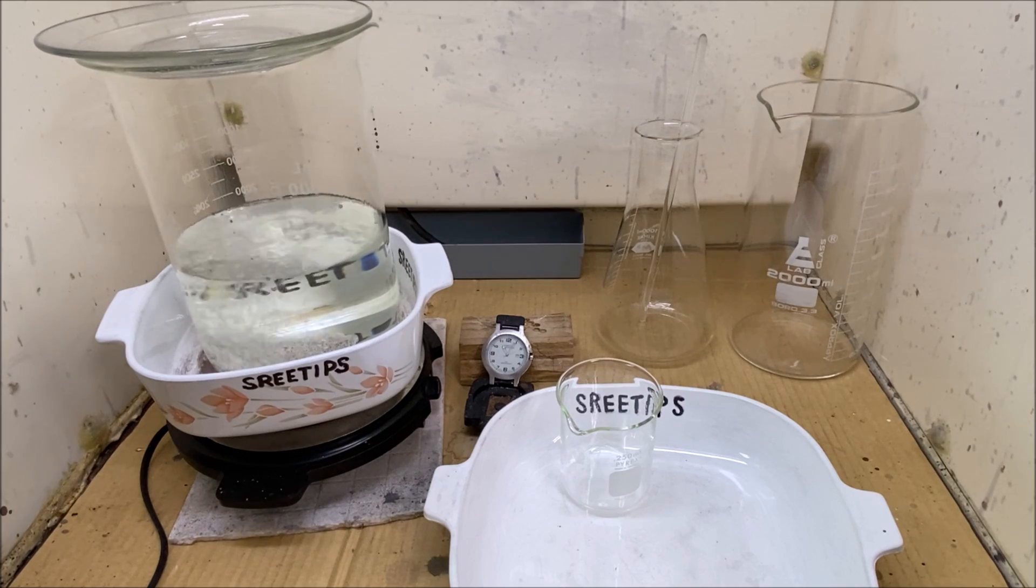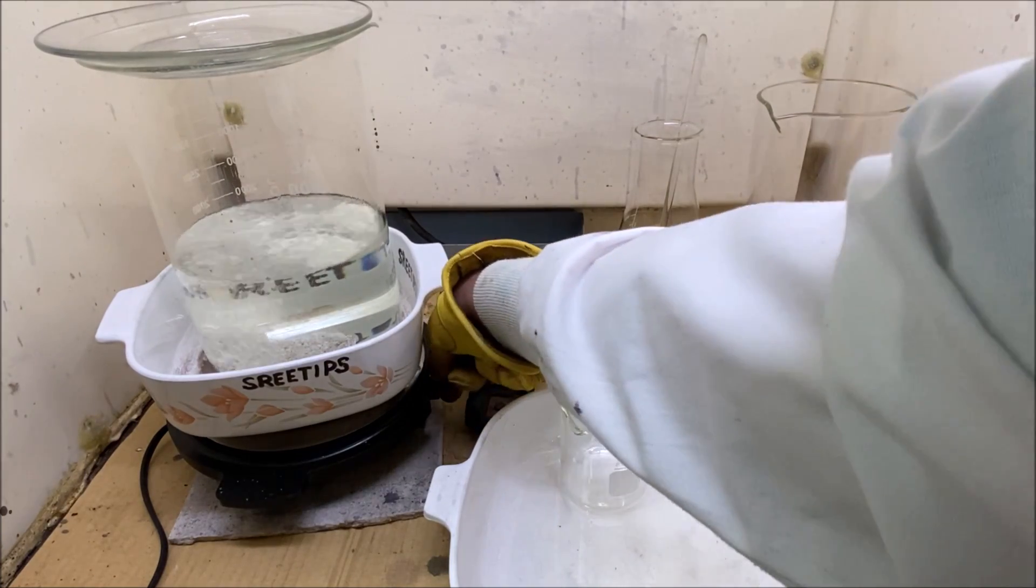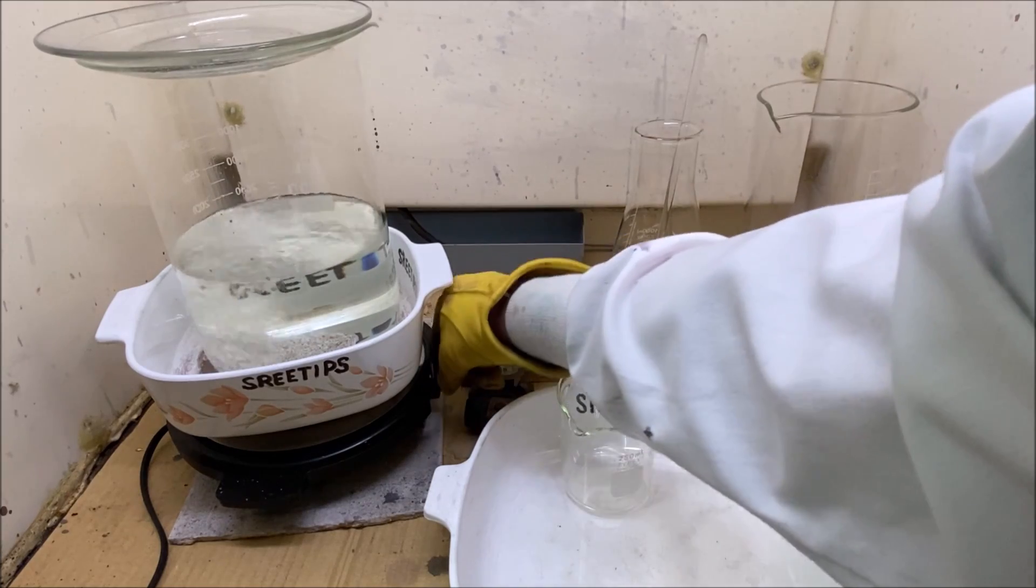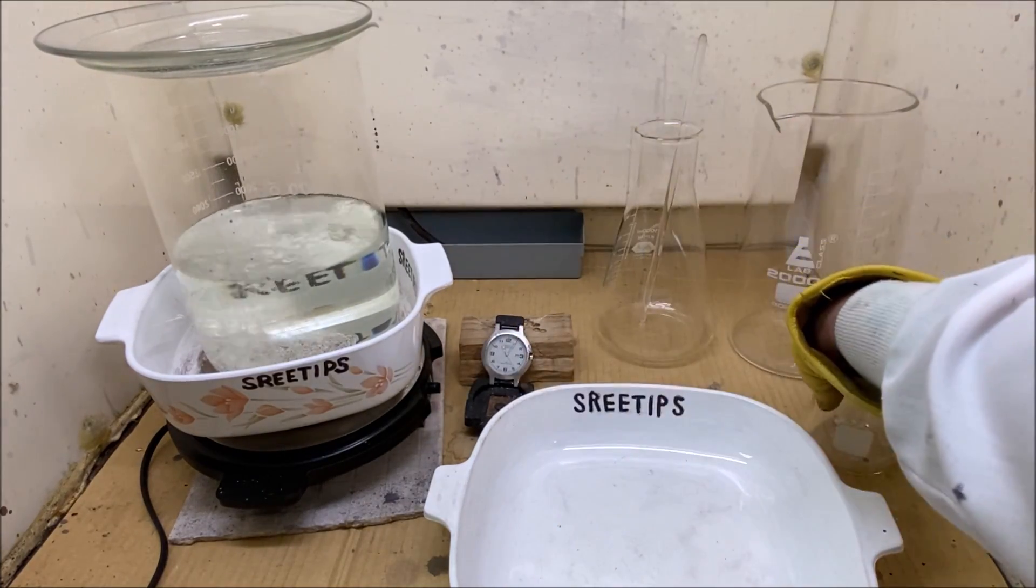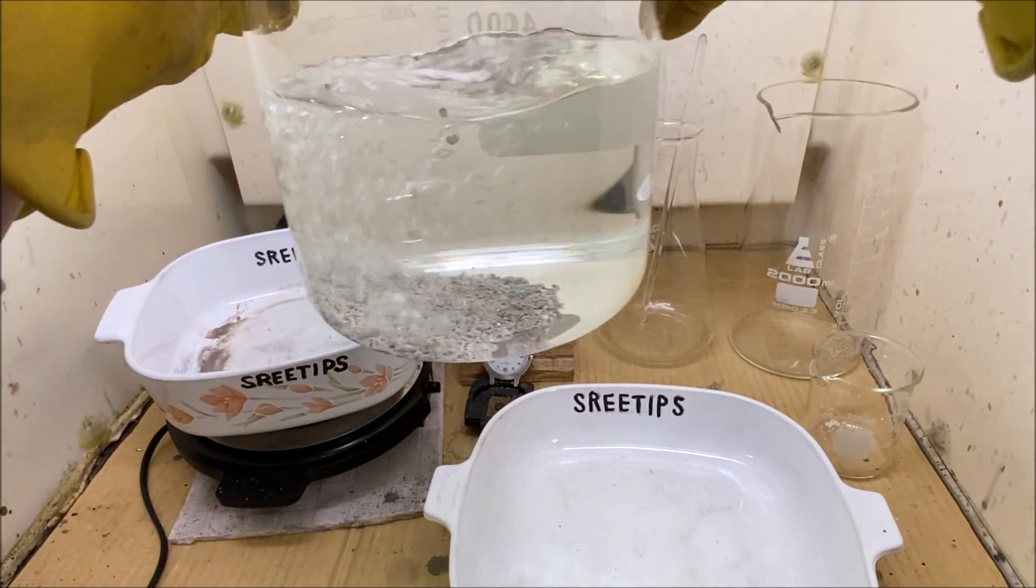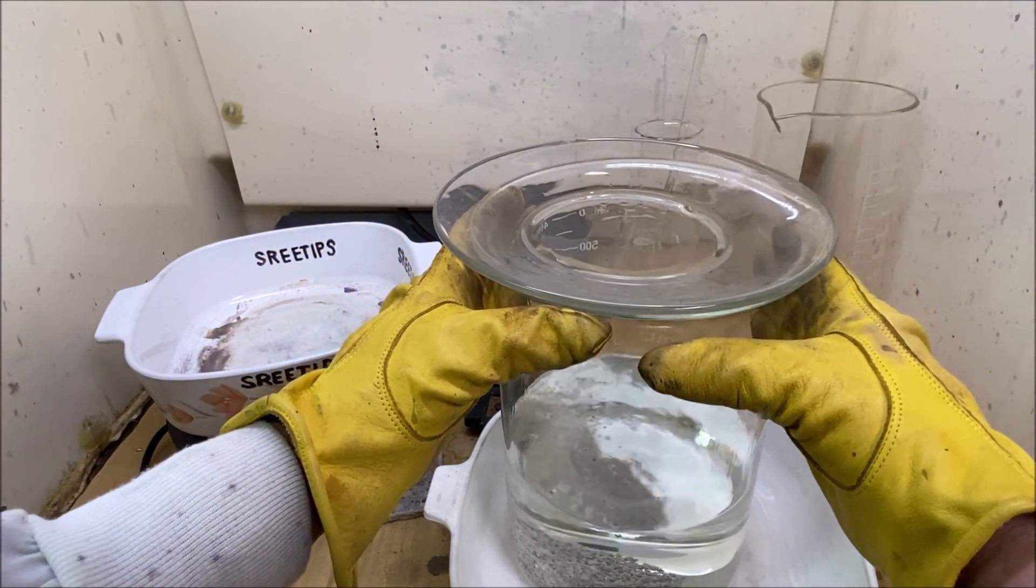I can tell by the lack of fume production that the silver has been dissolved. If you notice, there's some silver left down in the bottom of the beaker. That's important because we don't want a whole bunch of excess nitric in our electrolyte.